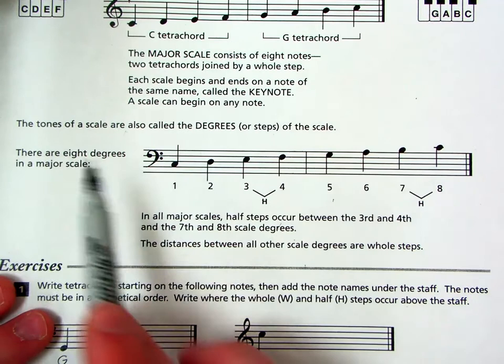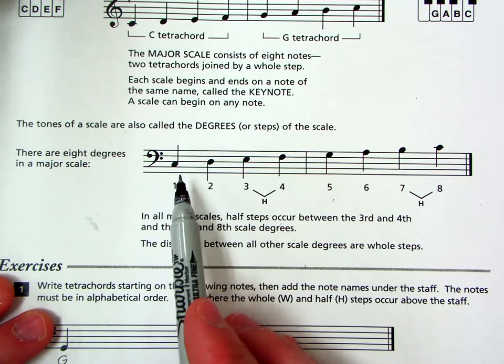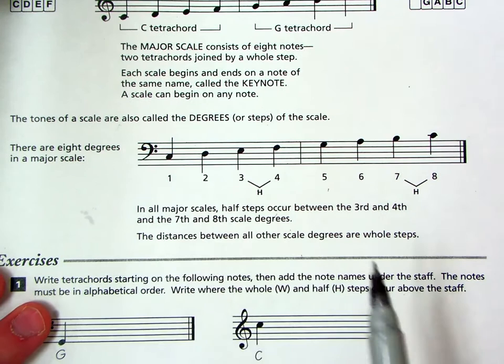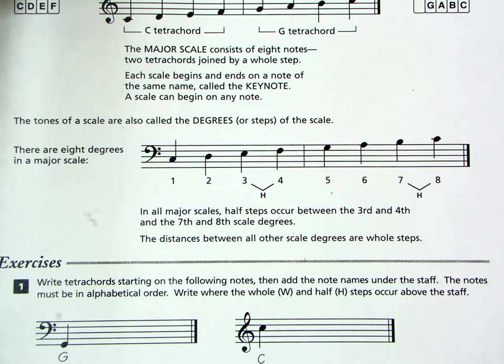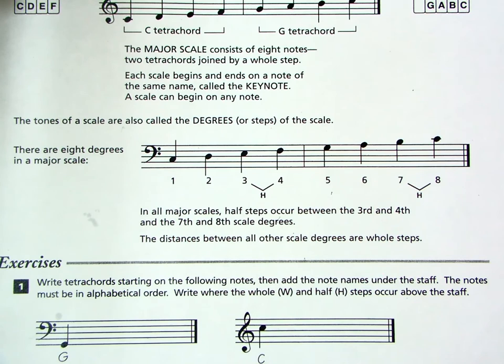Now, if we look down here further on the page, we also see that we have some things we can add to the scale once we do it. So the tones of a scale are also called degrees, or the steps of a scale. Basically, we're just giving each of the notes in this C scale a number. So this C is one, two, three, four, five, six, seven, eight. So scale degree one, scale degree two, and so forth. Because there are eight notes in a major scale, there are eight scale degrees.